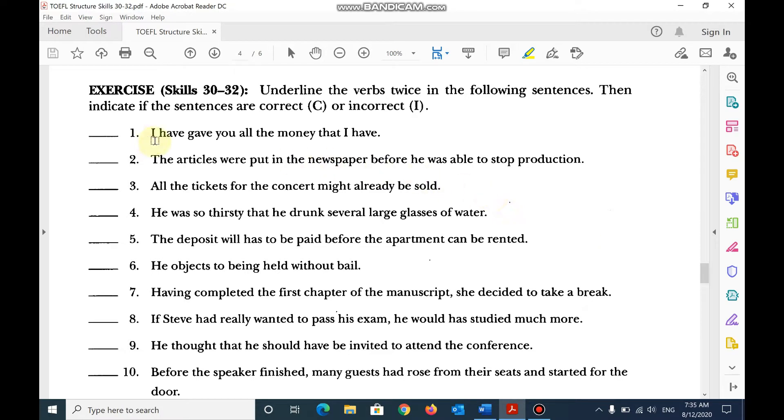Number 1, I have given. This is incorrect. Number 2, the articles were put. This is passive, in the newspaper before he was able to stop production. Nothing wrong here, correct?